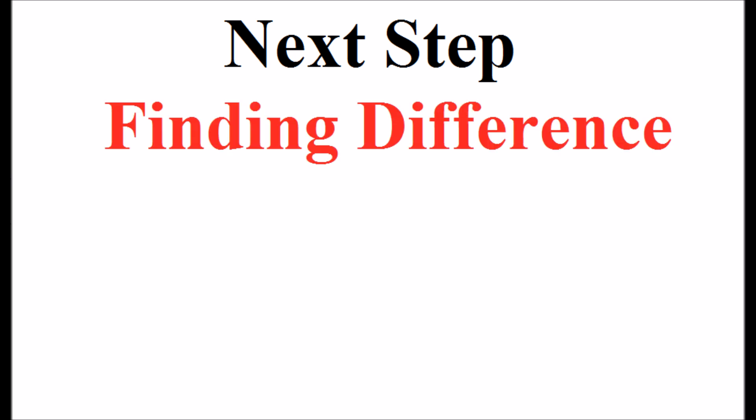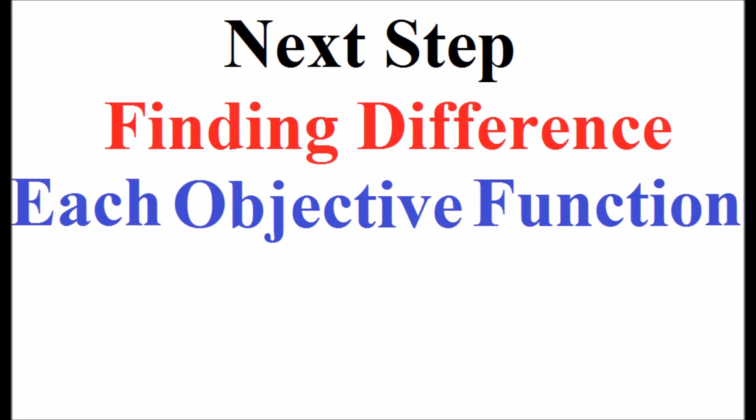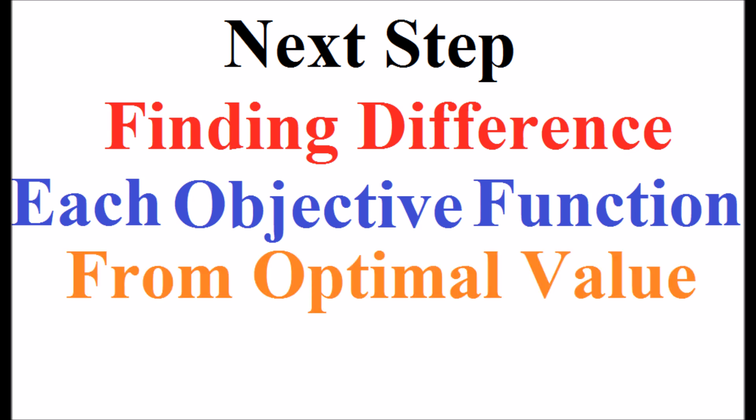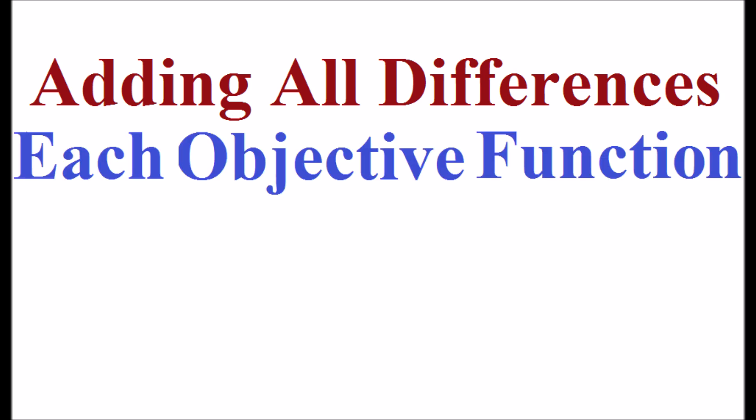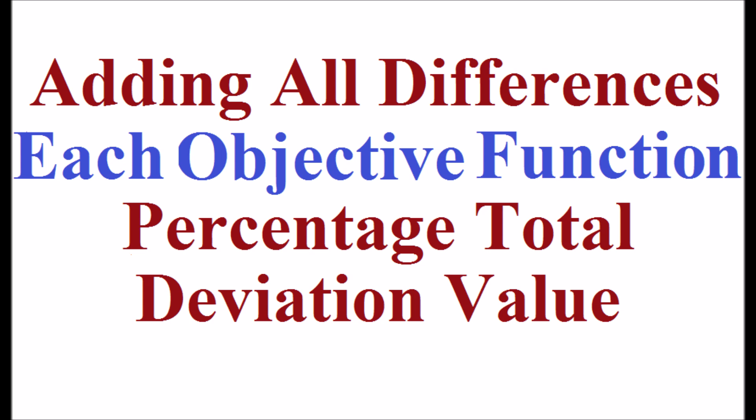Next step is finding the difference of each objective function from its optimal value in terms of percentage. By holding all the differences for each objective function called percentage total deviation value. Minimizing that is finding optimal value of percentage total deviation is the best solution.